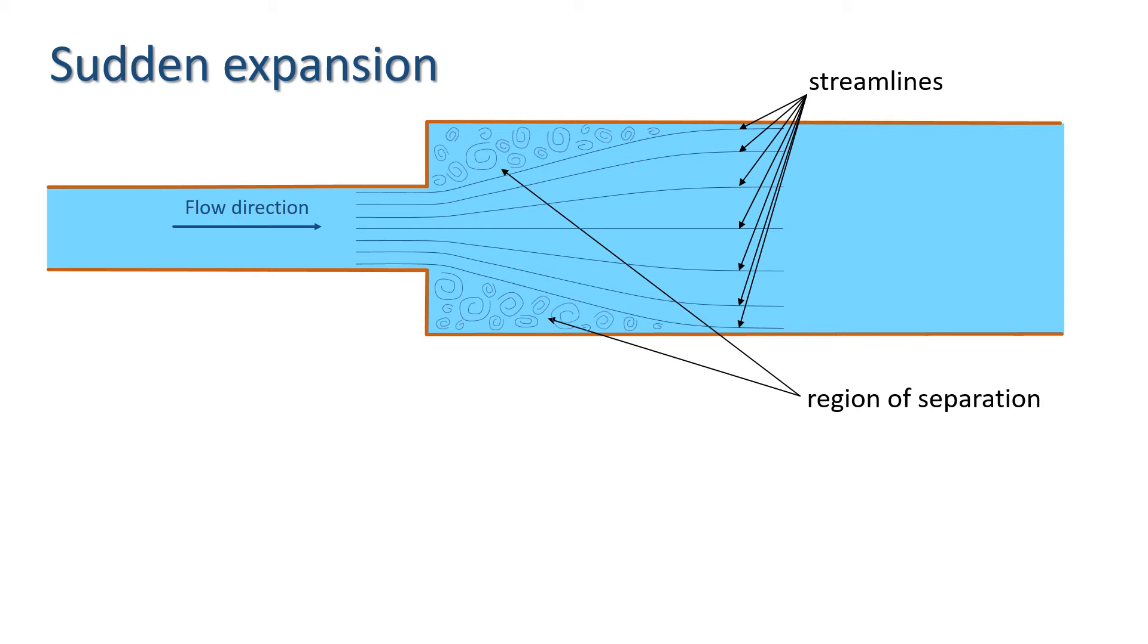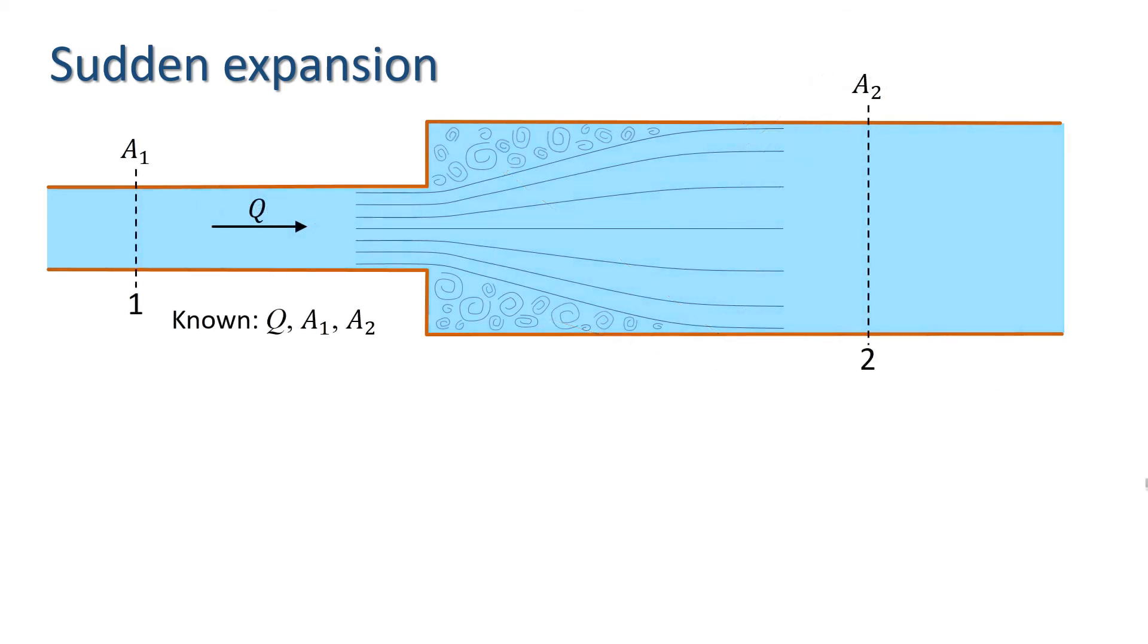Let's assume that we know the discharge and cross sectional areas up and downstream of the expansion. I'll assume that we know the discharge and areas at two cross sections denoted 1 and 2 as shown here. I can use cross sections 1 and 2 and the sides of the pipe to define a control volume.